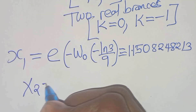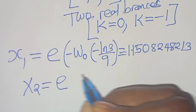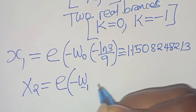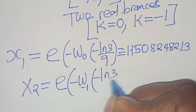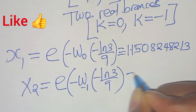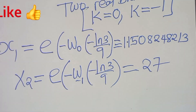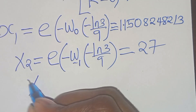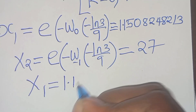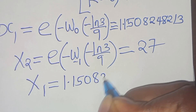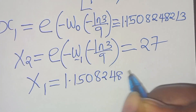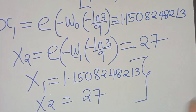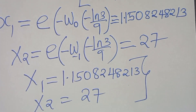And x₂ will be equal to e raised to the power of minus W subscript minus 1 of (minus ln(3) over 9), and this is equal to 27. So we have two solutions: x₁ is approximately 1.1508248213, and x₂ is equal to 27. This is by applying method 1. Let's proceed to method 2.